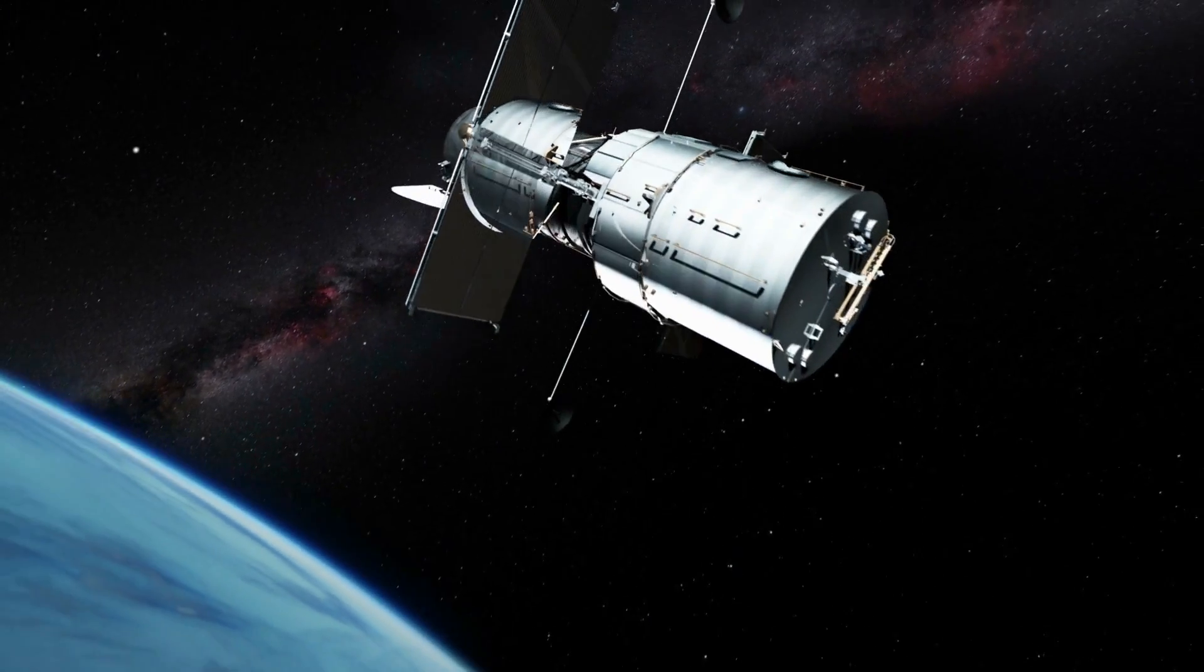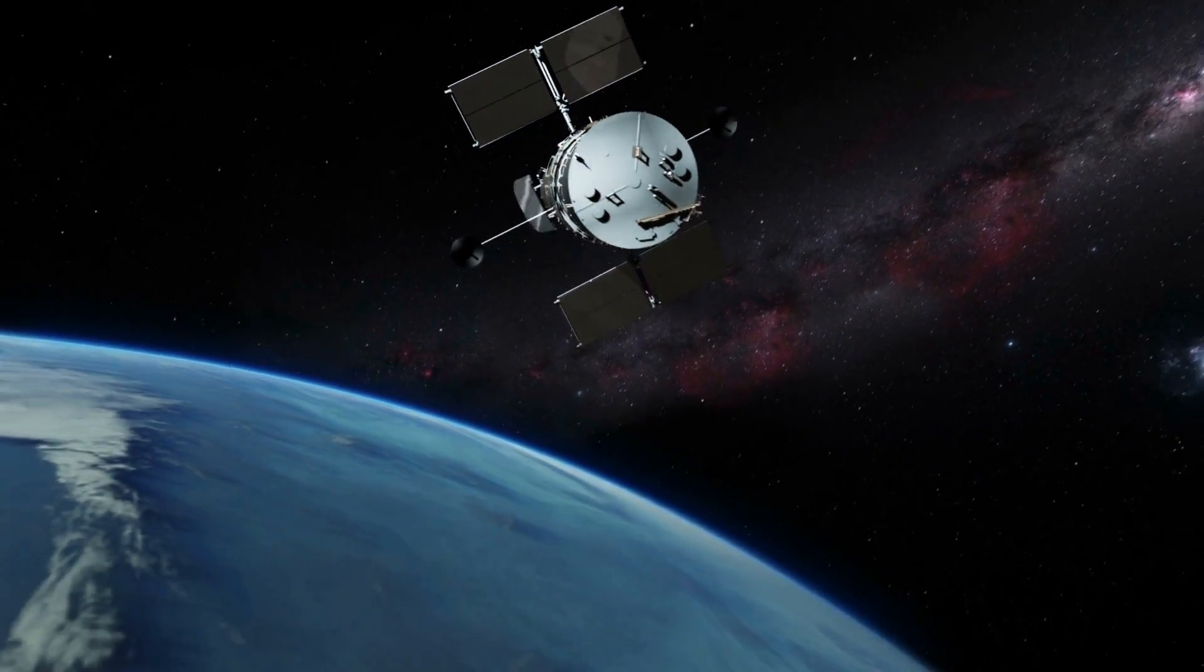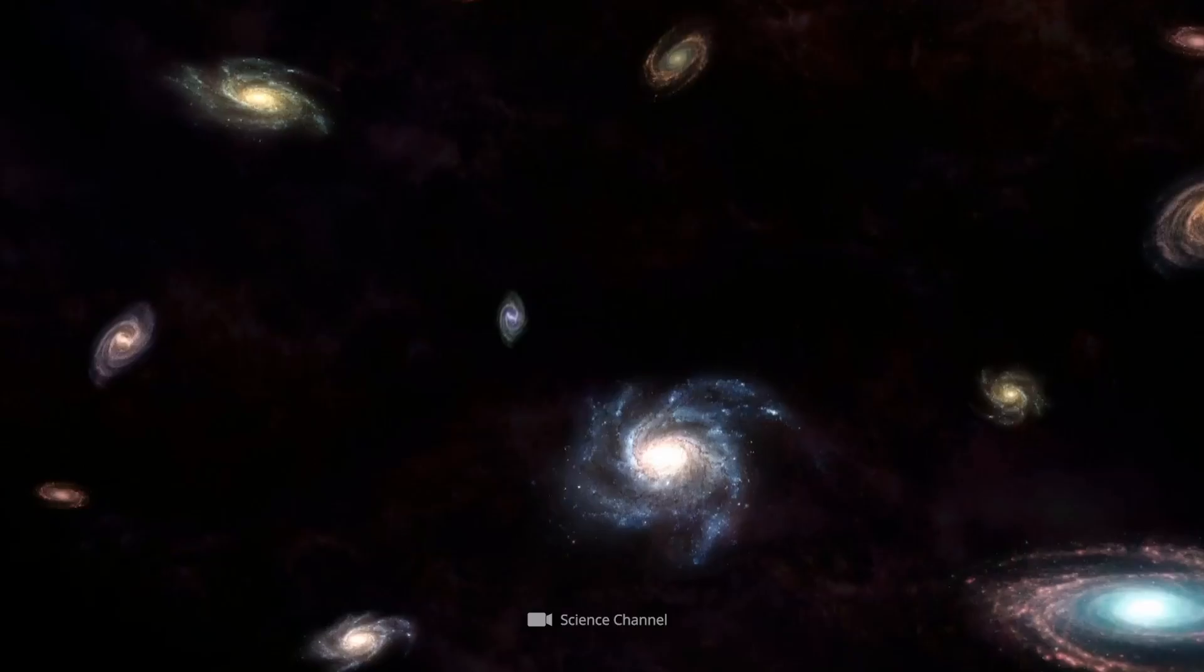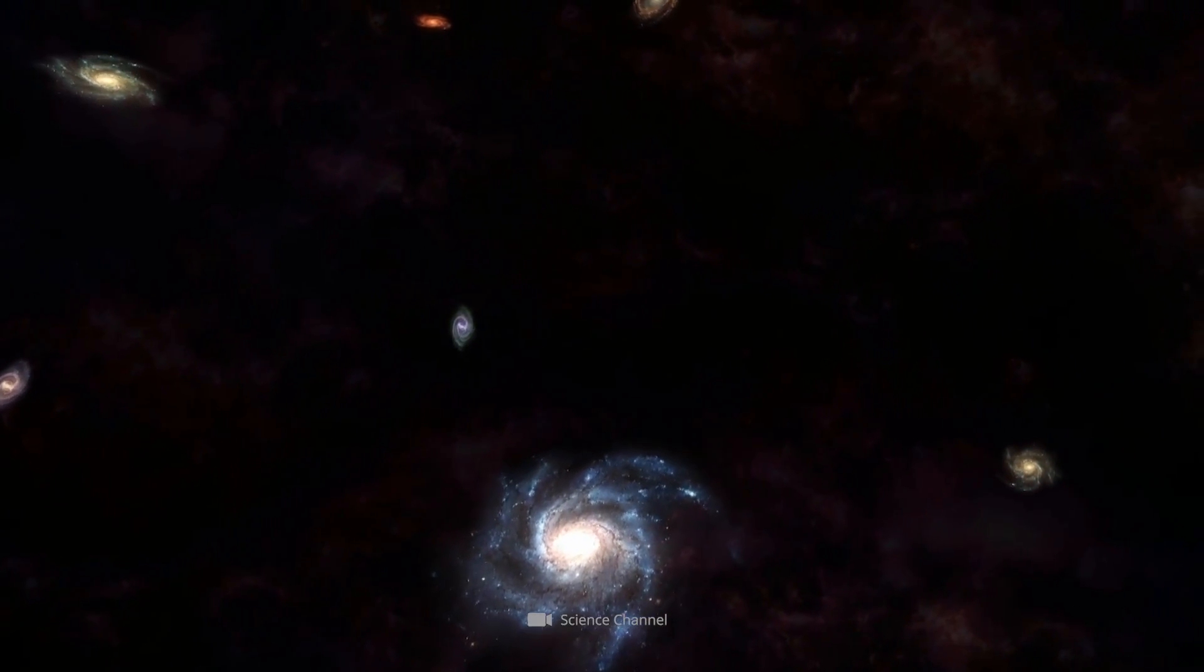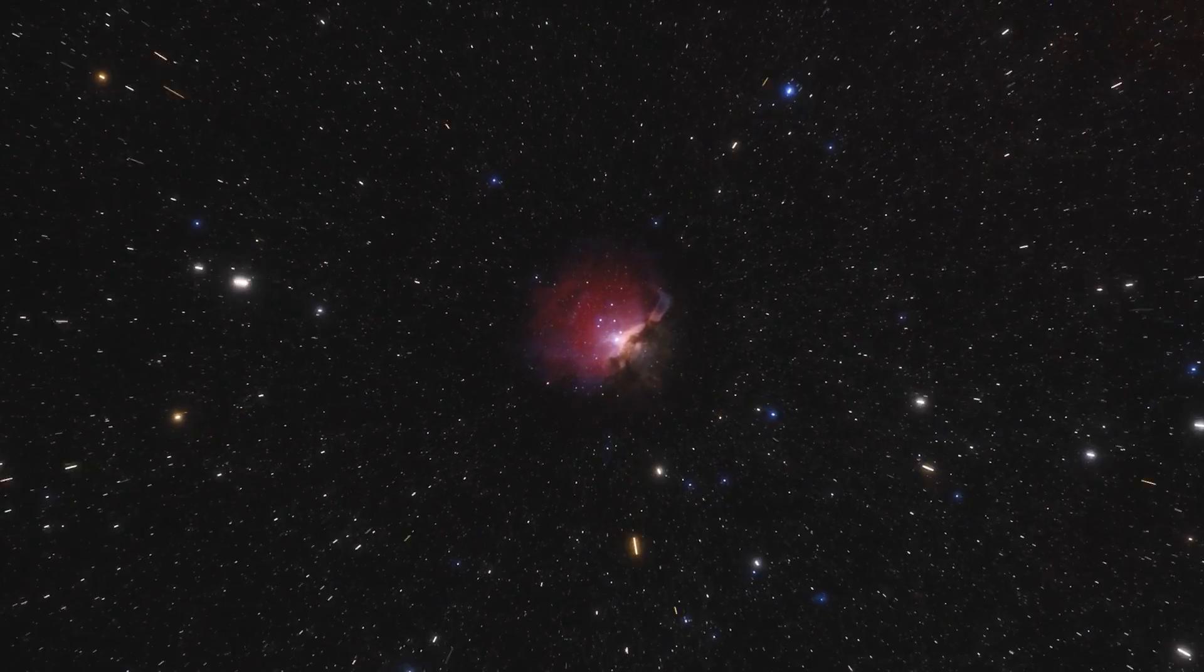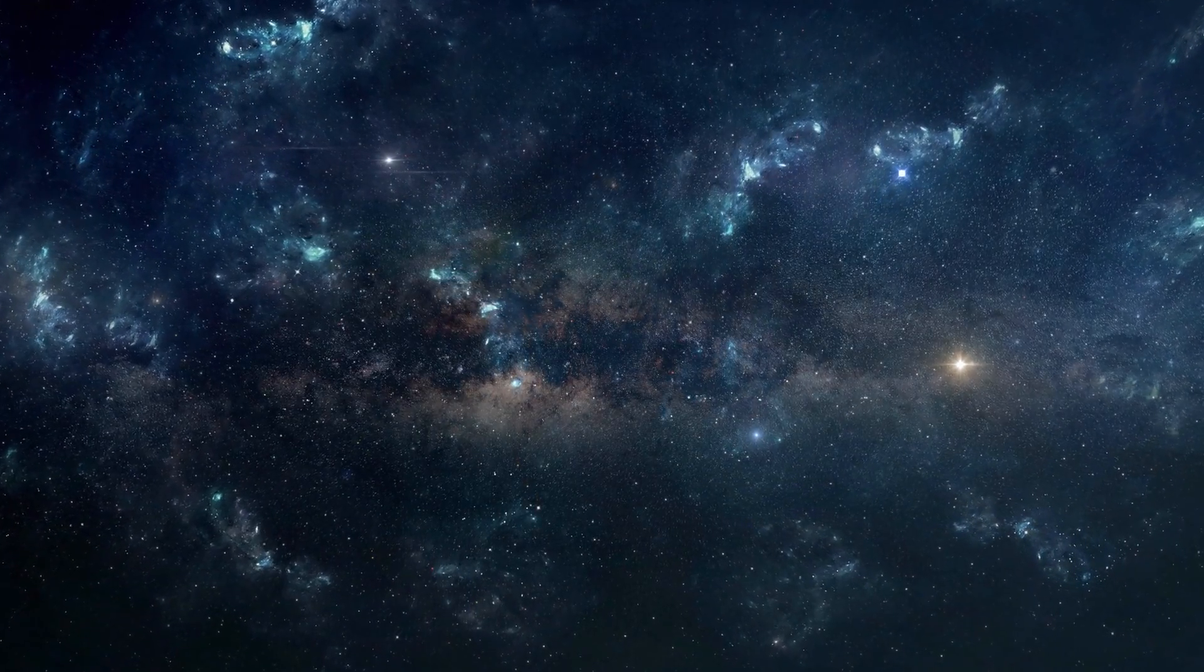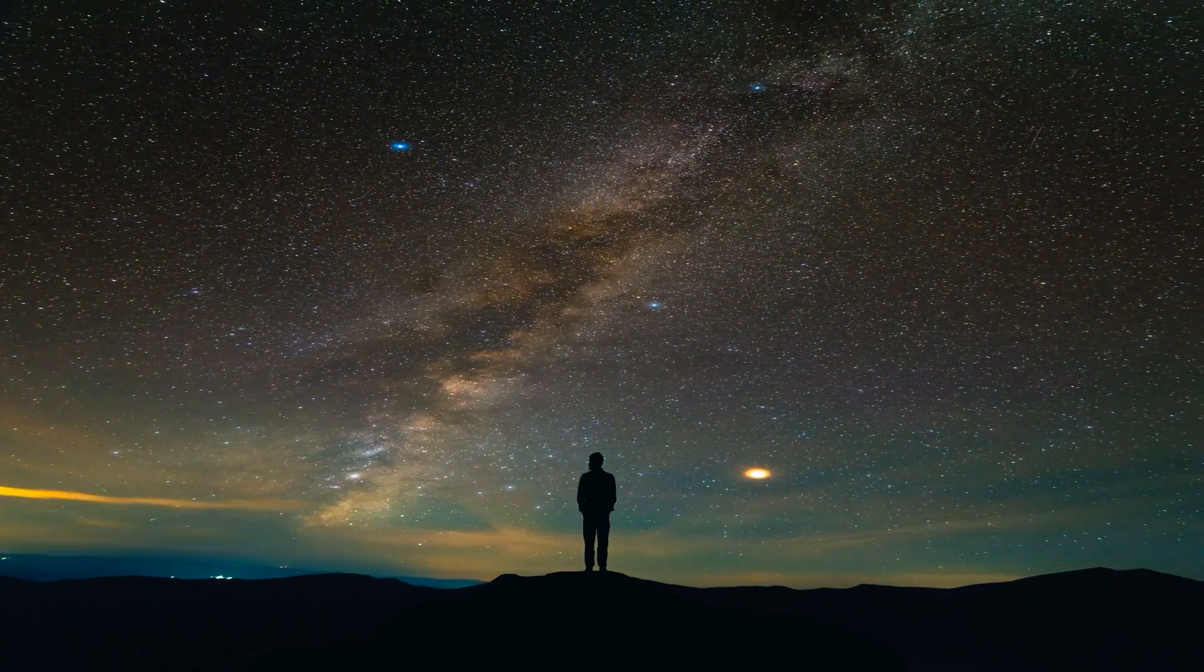The estimate that the universe is around 13.8 billion years old is based on several scientific observations. In 1929, astronomer Edwin Hubble discovered that distant galaxies were moving away from the Earth, and the further away they were, the faster they moved. This phenomenon became known as Hubble's Law, and it suggests that the universe is expanding. By reversing this expansion, it's theoretically possible to go back to a point when the universe was very small, which corresponds to the presumed time of the Big Bang.